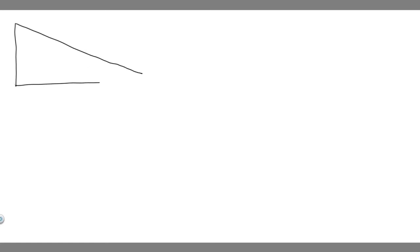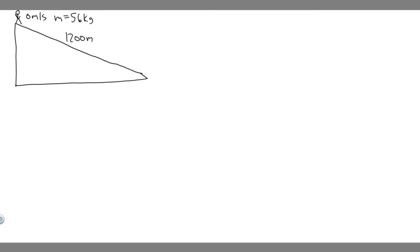Before we solve this problem let's go ahead and draw what's going on. This right here is going to be the slope that the skier is going down. The skier starts at the top from rest — zero meters per second — and the mass is 56 kg. The trail is 1200 meters long and it drops a total height of 230 meters. At the bottom they're moving 11 meters per second.